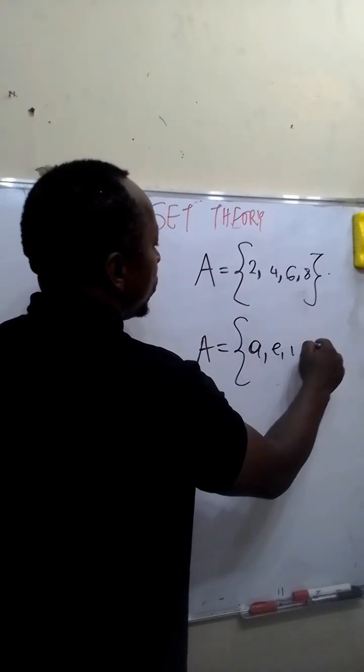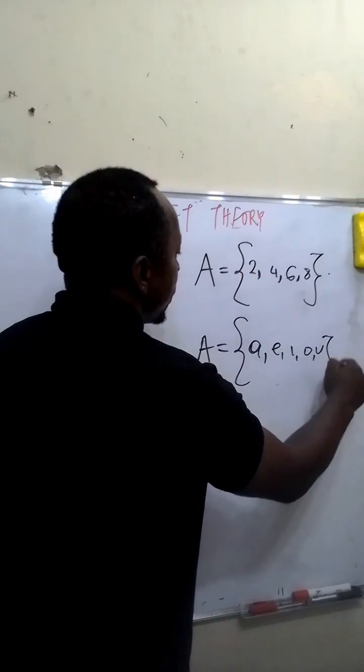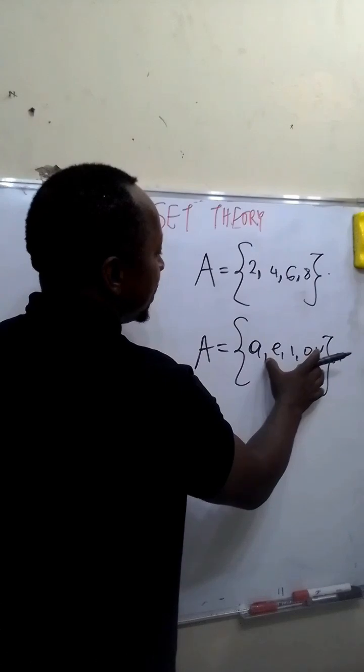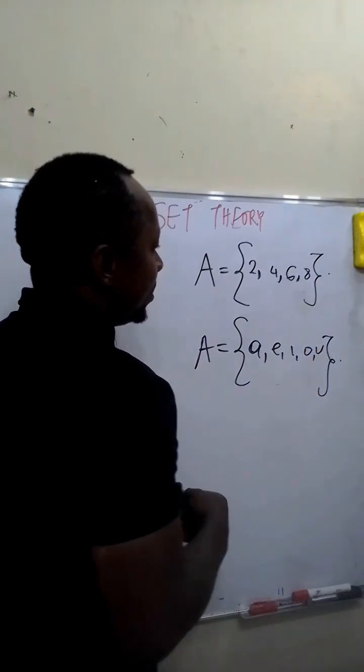e, i, o, u, small letters. In representing sets, we use small letters to represent the elements.